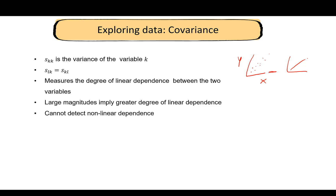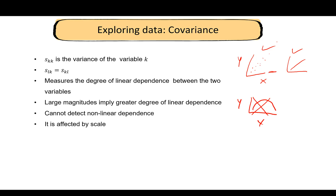Covariance cannot detect non-linear dependence. If the plot of x and y shows a curved relationship, there is clearly a non-linear relation between them, but the covariance would not capture it — it only detects linear relations. Covariance is also affected by scale: if you change the scale of the variables, the covariance between them will change. We will explore these properties in more depth in a lab session.